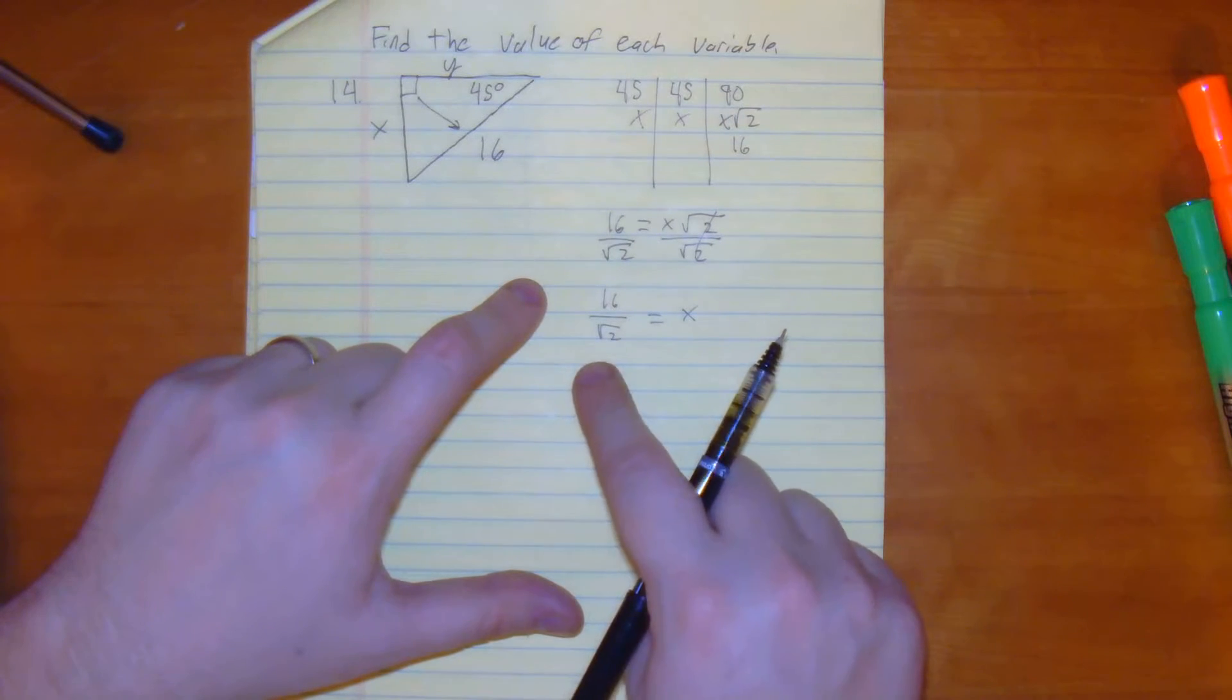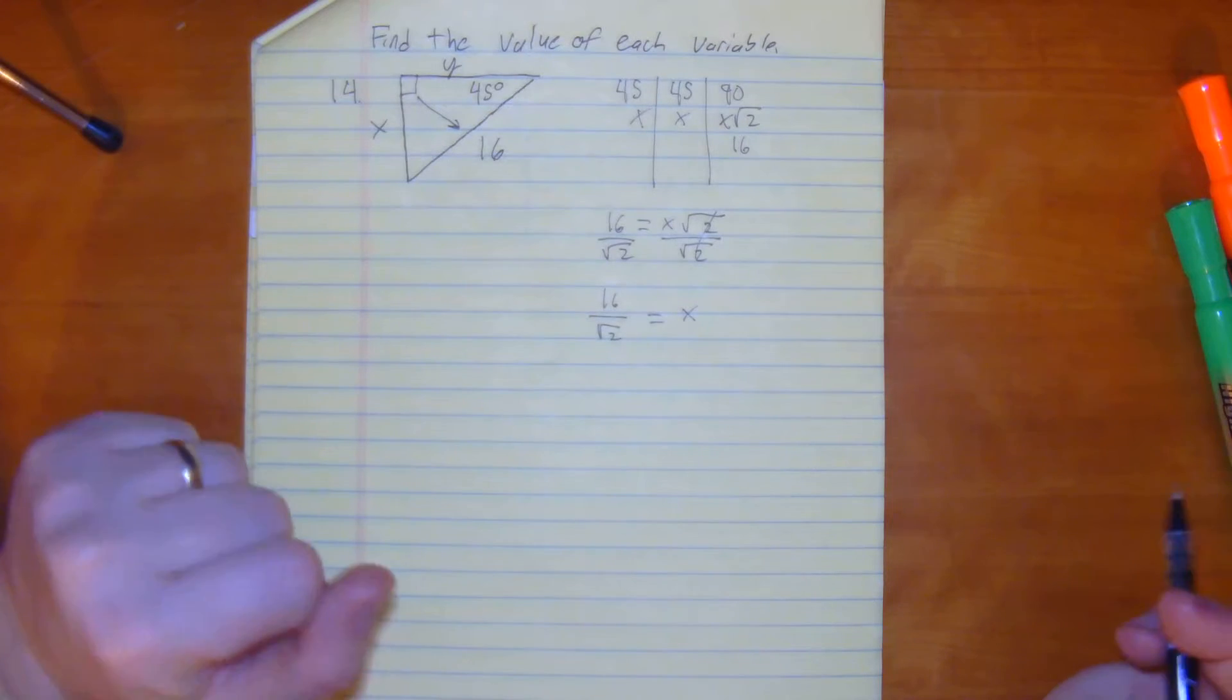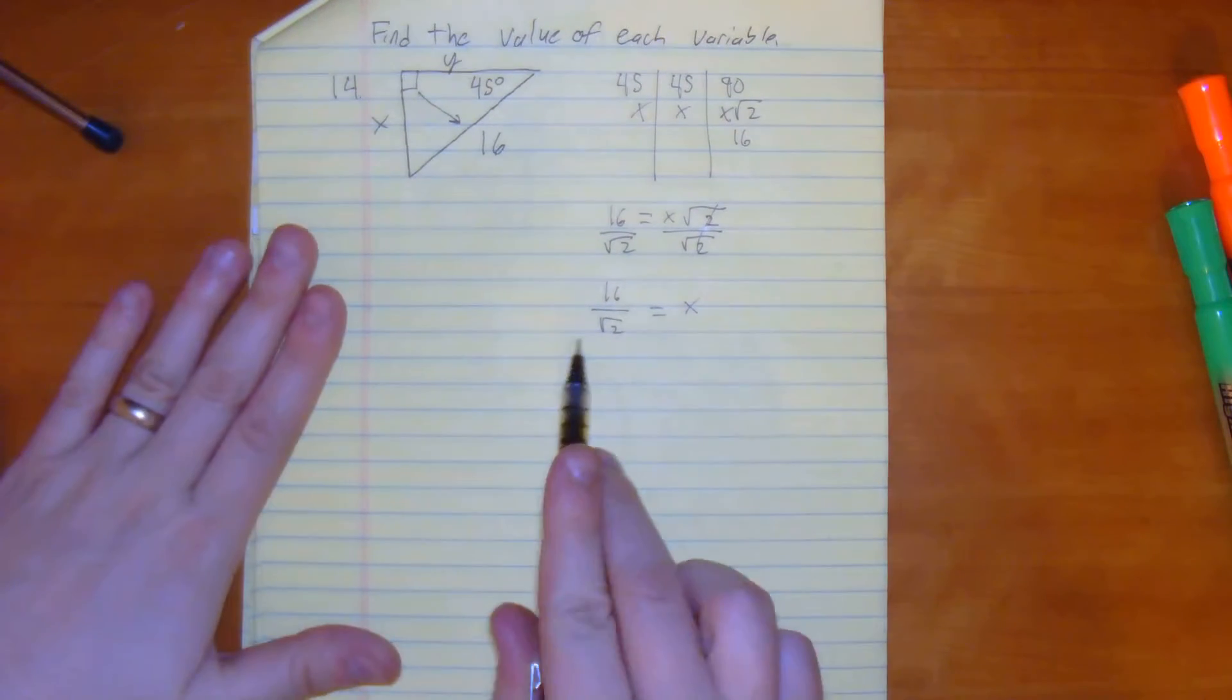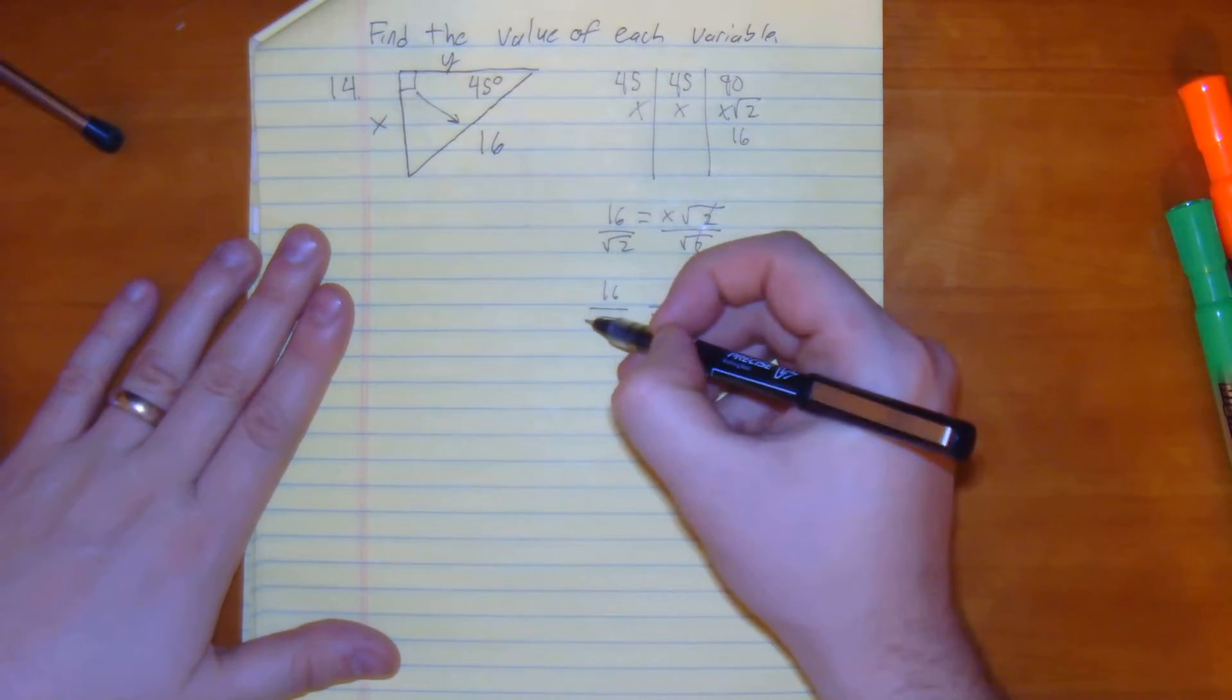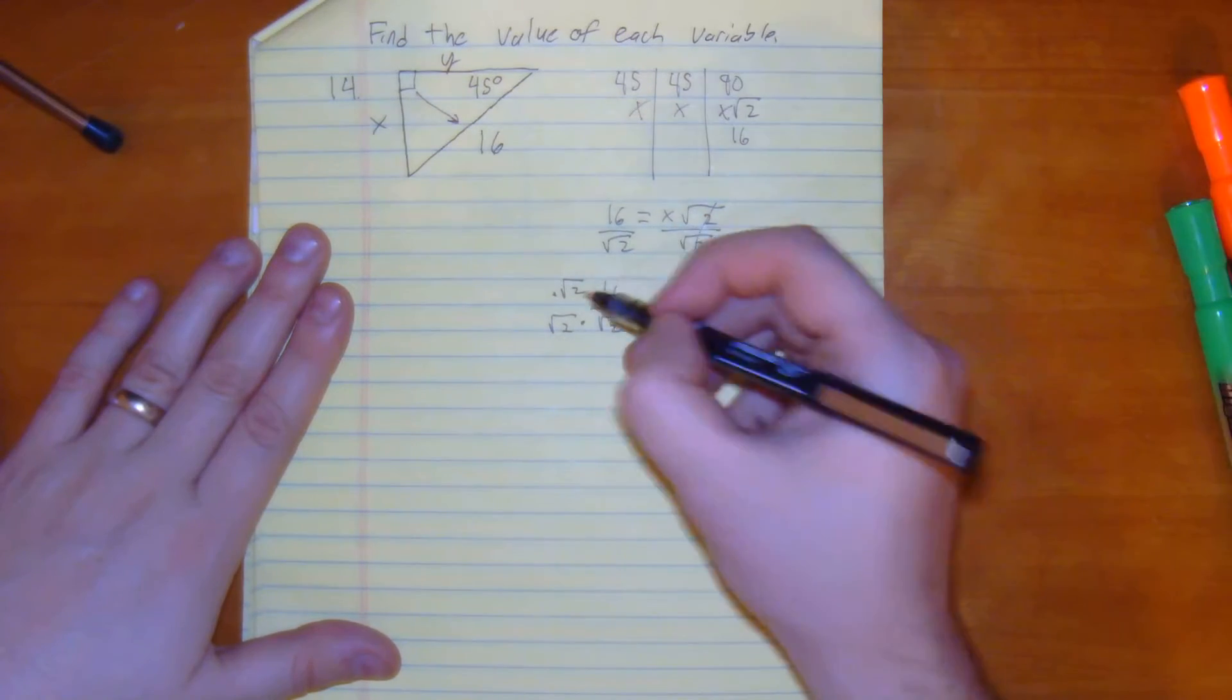The problem is we want to rationalize the denominator. So what you have to do is multiply both sides by something that will get rid of the radical. The way we would do that, multiply both sides by square root of 2.